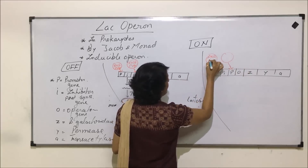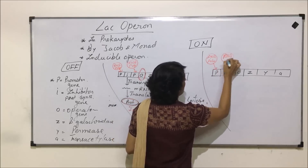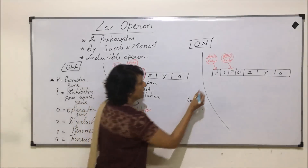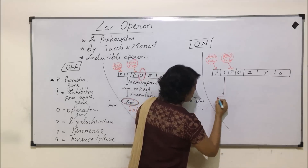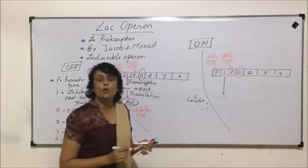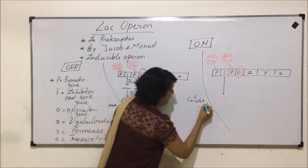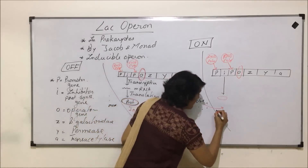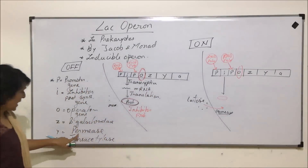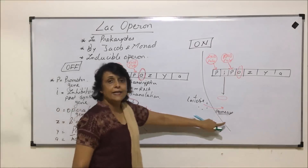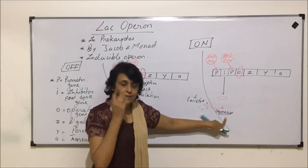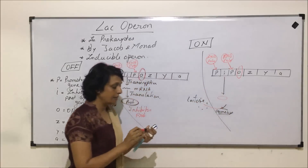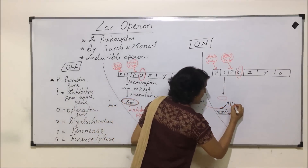In the off mode, a protein was synthesized from the inhibitor gene and that protein goes and binds at the operator gene — that is why it was turned off. As soon as lactose is available, this lactose diffuses into the cell. This diffusion is helped by permease, the enzyme synthesized by gene Y. At any given time the cell has some molecules of permease which allow the entry of lactose. This lactose then gets converted into another form of lactose known as allolactose.